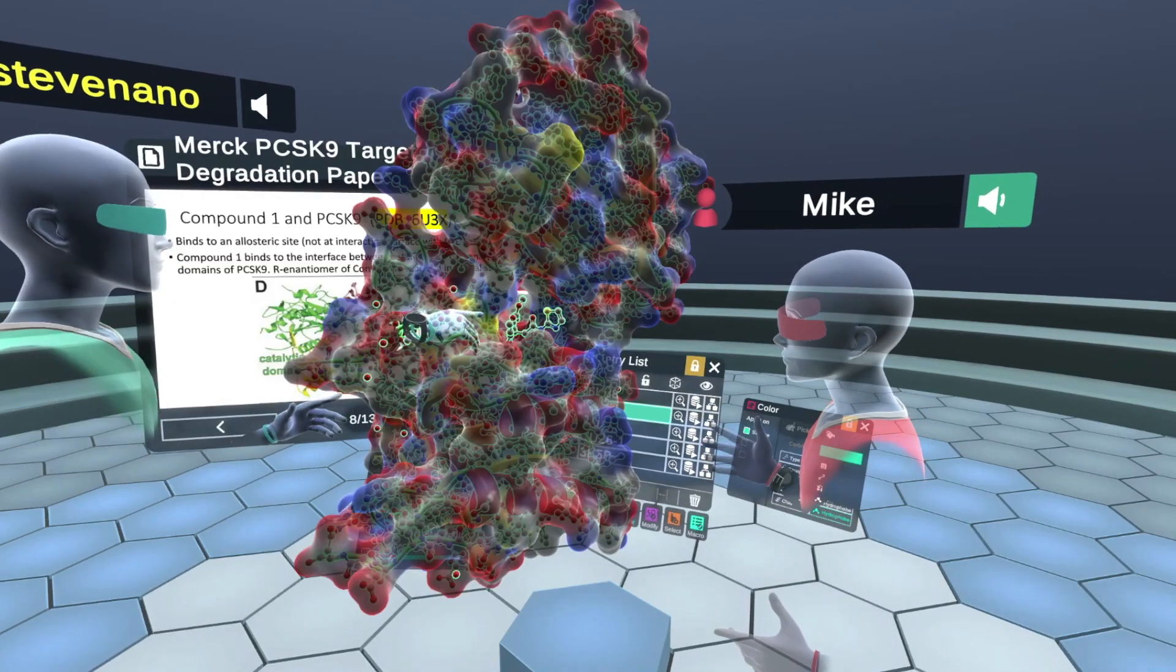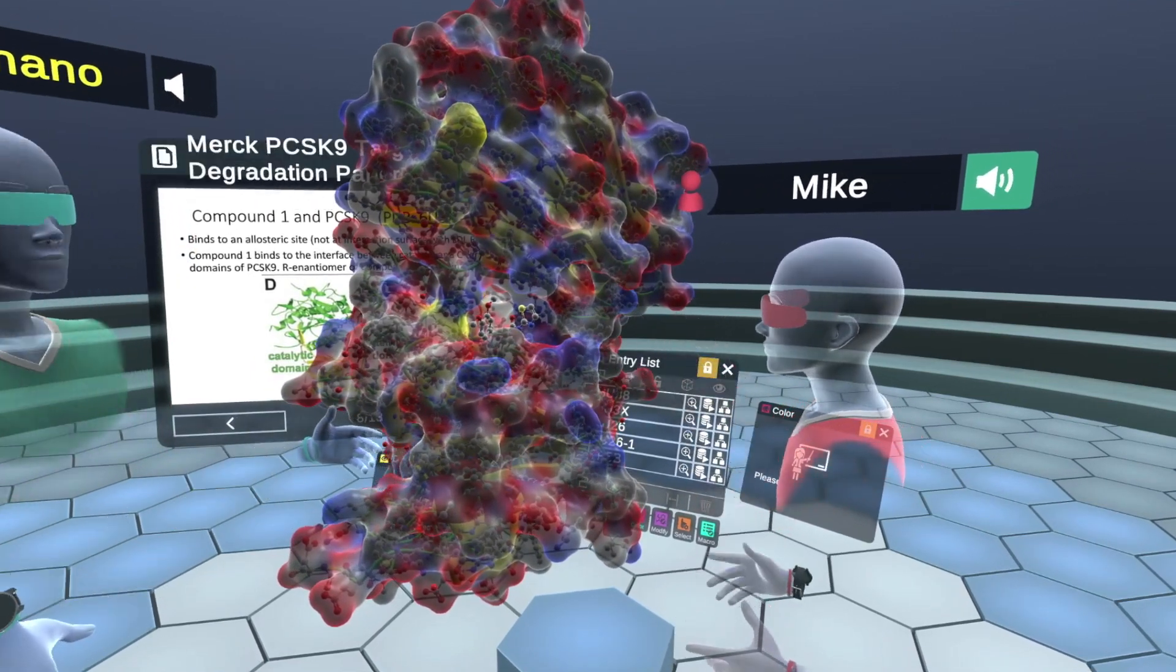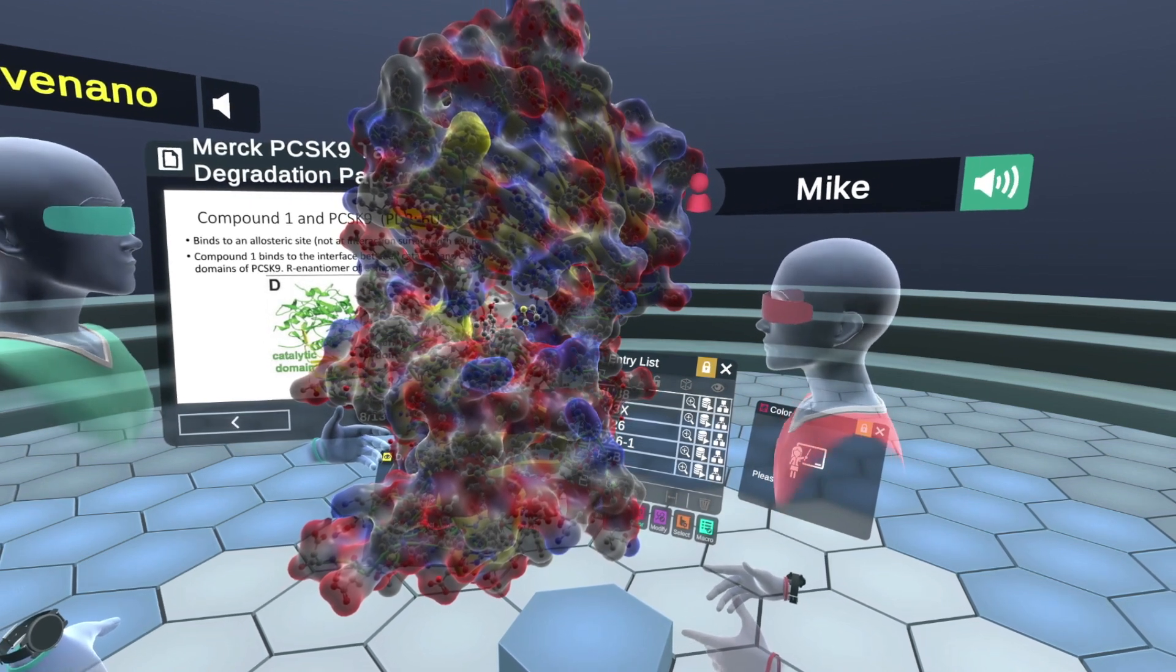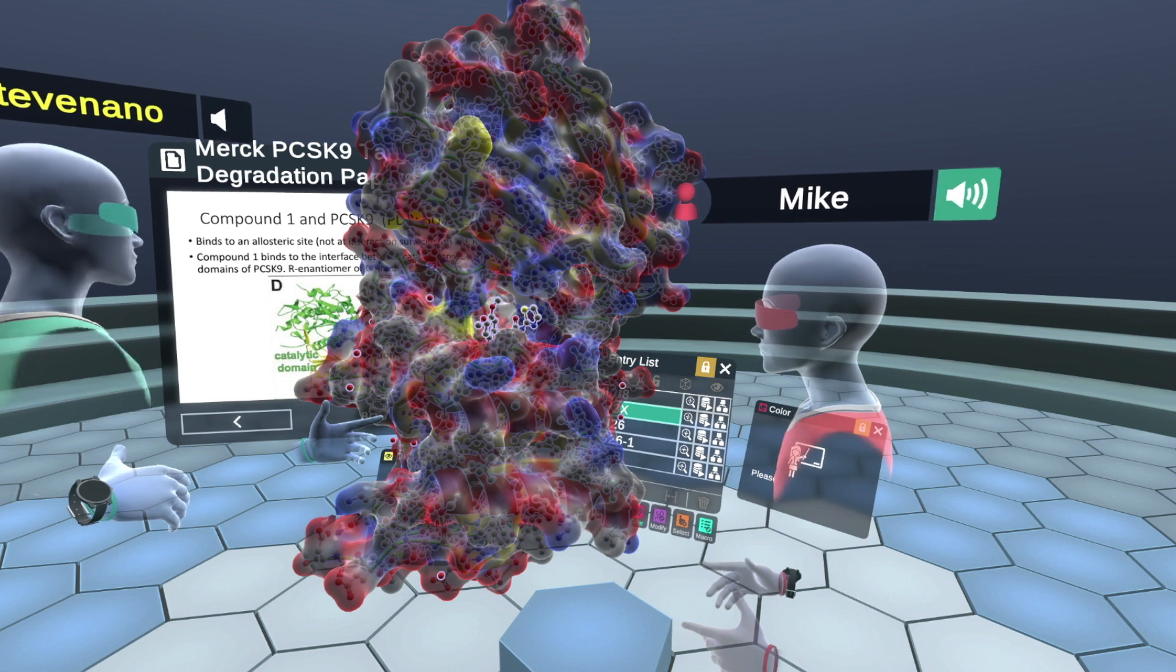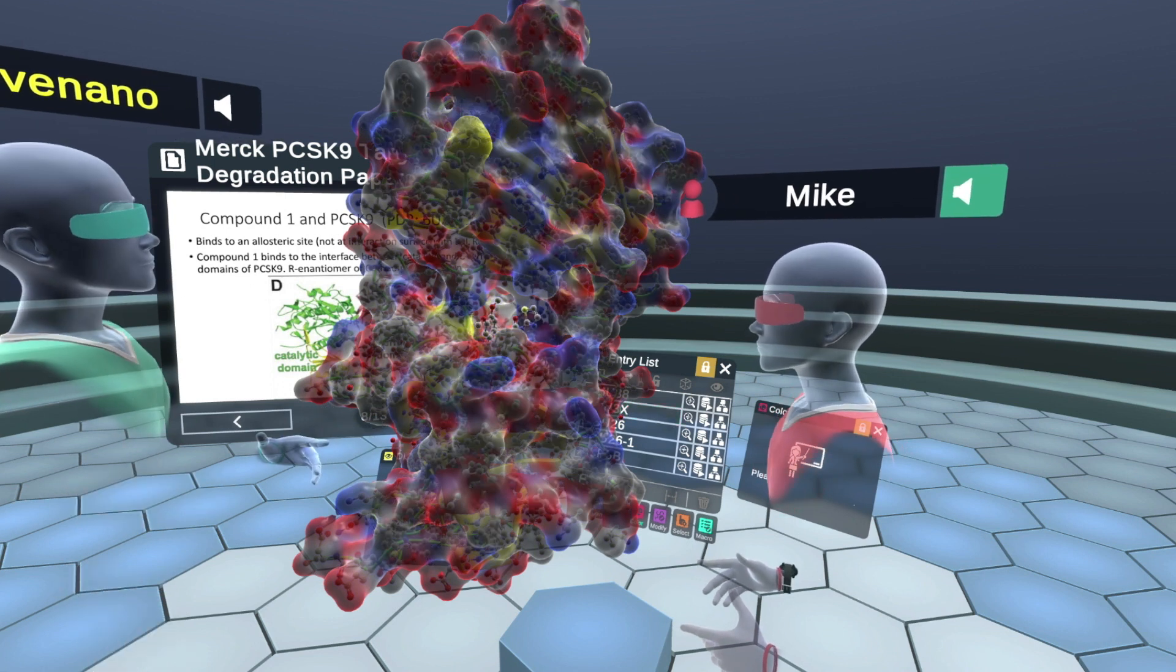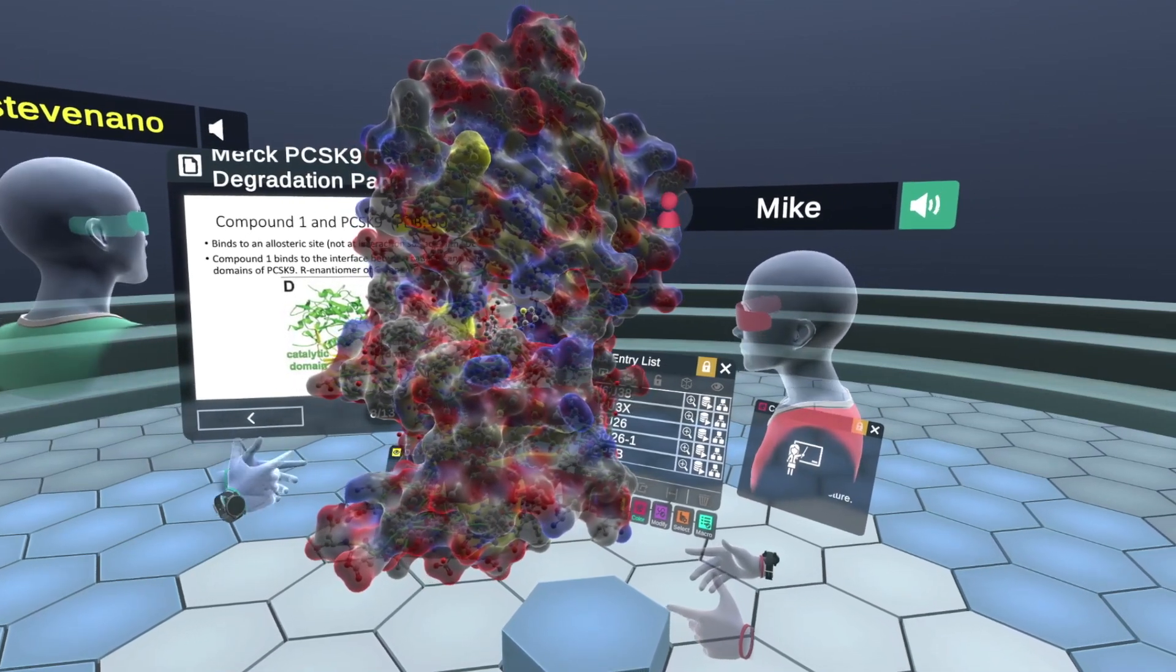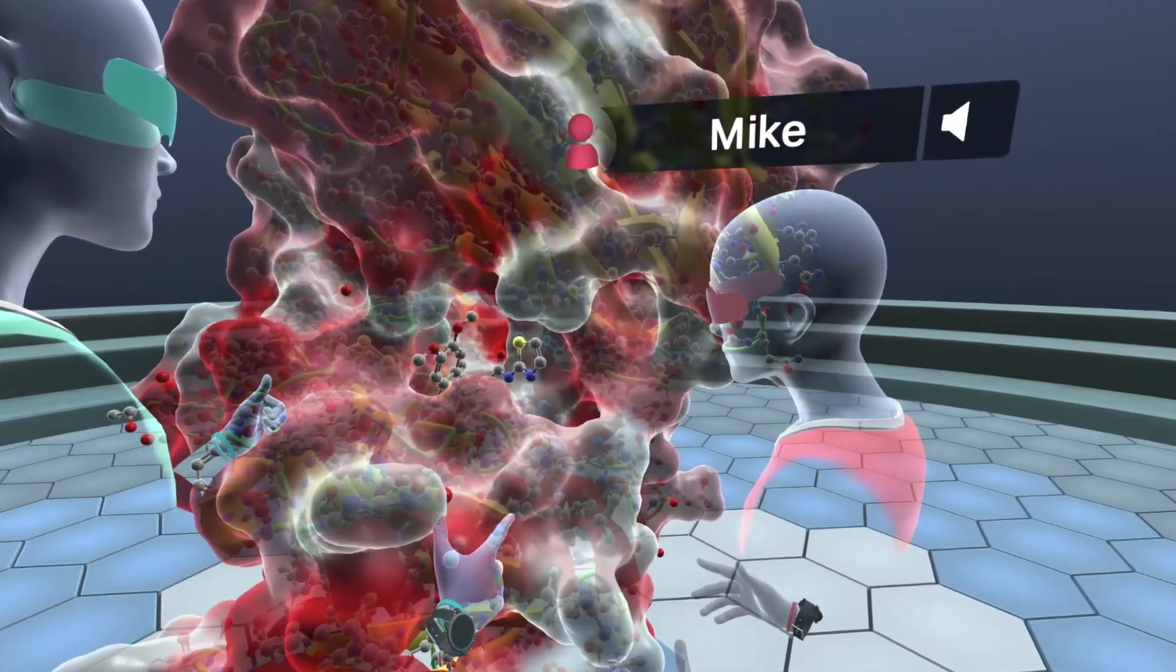The proteasome is a complex inside cells that basically chews up unwanted or damaged proteins. So what's interesting about this is this is what we call an allosteric site. It's away from where the action is happening. MOE's site finder did predict this as a possible place where a small molecule could bind. Merck screened over 200,000 molecules using affinity selection mass spec. They found one binder out of all those compounds. Let's go into the binding pocket.